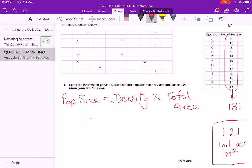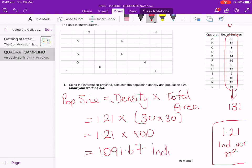So we're going to put that into our equation: 1.21 times our area, which is 30 times 30, which is 1.21 times 900 metres squared. And so when you put that into your calculator, you should end up with a value of approximately 1,091.67 individuals.